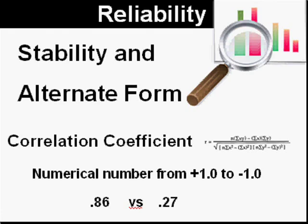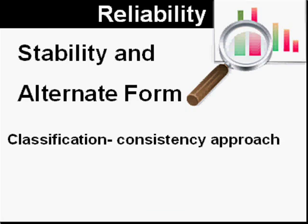For the instances of stability and alternate form reliability, there are two methods. The first one is called the correlational coefficient, which produces a number with a numerical value between 1 and negative 1. The higher the number, the greater the correlational coefficient is said to be. The next one is called the classification or consistency approach, which looks at students who have mastered the material and those who still need work on it, and comparing those produces a number giving you a classification consistency result.